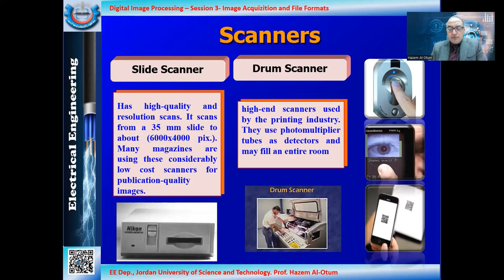These are transparency sheets — like tracing paper with colored or black-and-white printing on them, burned onto the sheet. They are placed as slides one after another and projected at once. This is a device called an overhead projector, and it went out long ago. These transparency sheets are not digital at all and have nothing to do with our work. The scanners we are discussing are all digital — they read using a CCD camera and convert the image into digital files.